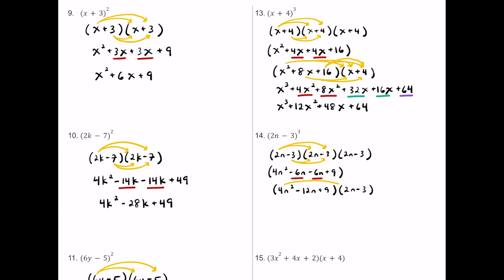Now multiplying that trinomial by the remaining 2n minus 3: 4n squared times 2n is 8n cubed. 4n squared times negative 3 is negative 12n squared. Negative 12n times 2n is negative 24n squared. Negative 12n times negative 3 is positive 36n. Then 9 times 2n is plus 18n, and 9 times negative 3 is negative 27.